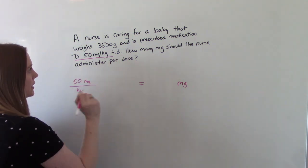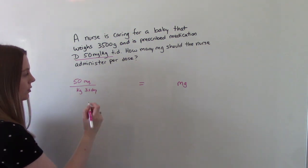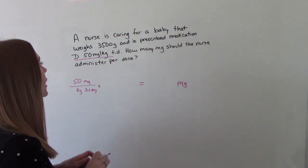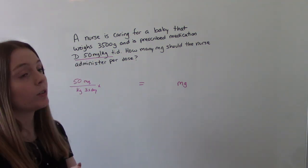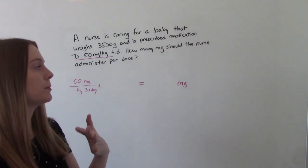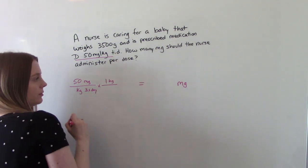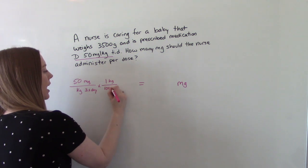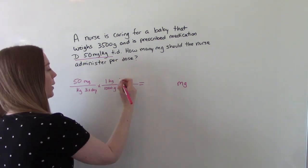If you want to add the three times a day, you can. The baby weighs 3,500 grams. So now we need to convert kilograms and grams. So 1 kg is 1,000 grams. And then we know the weight of the baby.